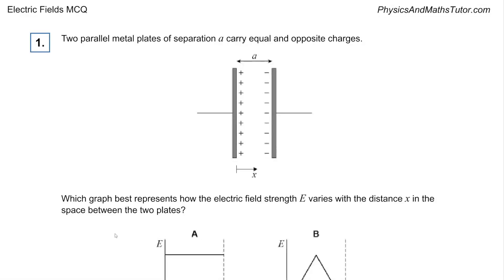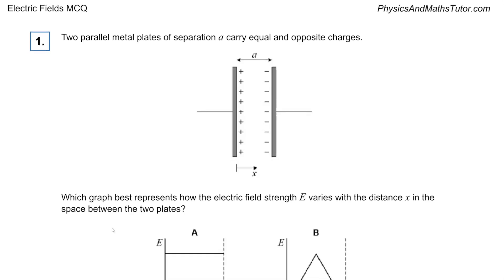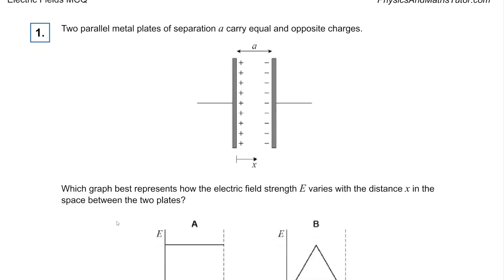Hello, this is Science Shores here. I'm going to be going through some A-Level Physics multiple choice questions. These are for AQA, but they're good no matter what board you do, to be honest. So this is questions 7.3 electric fields. Links to where you can get these PMT physics and mass tutor questions is in the description.